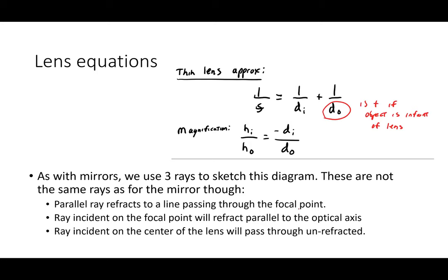We have the lens maker's equation, the thin lens equation — which looks similar to the mirror equation but with different sign conventions — and the magnification equation. Just like with mirrors, we draw ray diagrams using three rays, because if you make one mistake, the three rays won't all converge in the same spot, helping you track down the error. Ray one: parallel rays bend to the focal point. Ray two: rays through the focal point come out parallel.